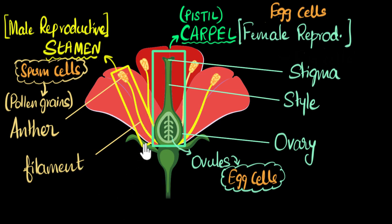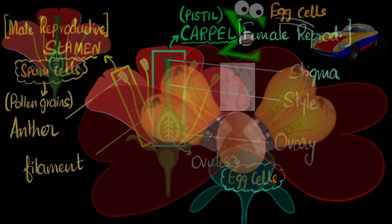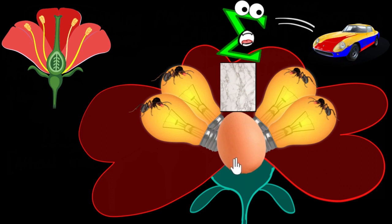Anyways, these are the important parts of the stamen and the carpel. Now comes the big question, how do we remember this? So to remember this, I want you to look at this picture. Trust me, this weird picture will help you. So this middle part is the female reproductive part. Let's see how this helps me to remember.